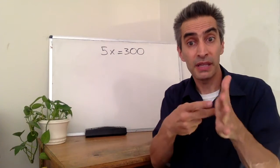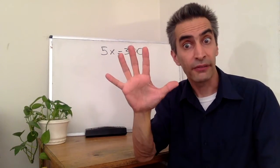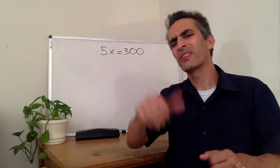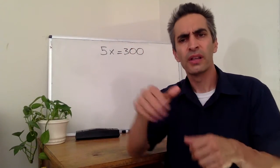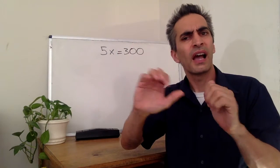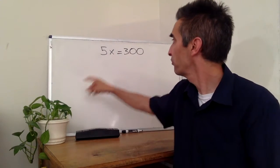Remember we want to solve for x, which means we want to get rid of the 5. So how do we get rid of the 5? How are the 5 and the x related?